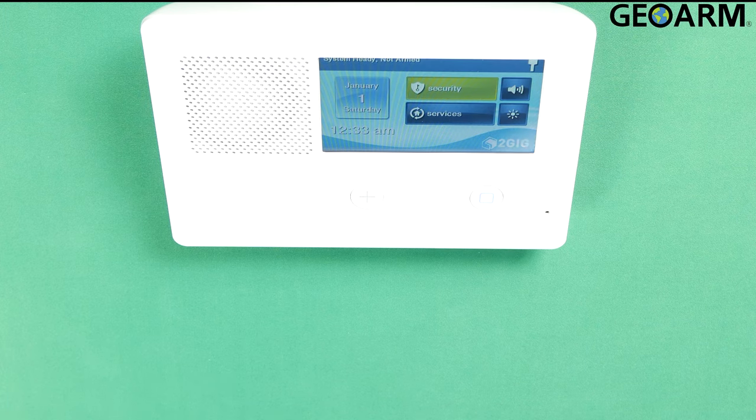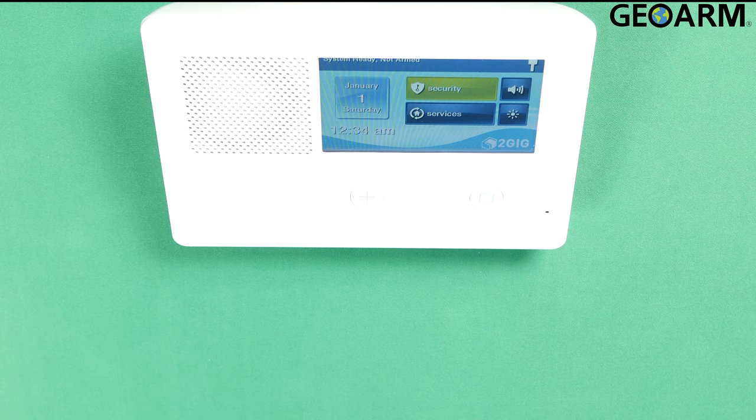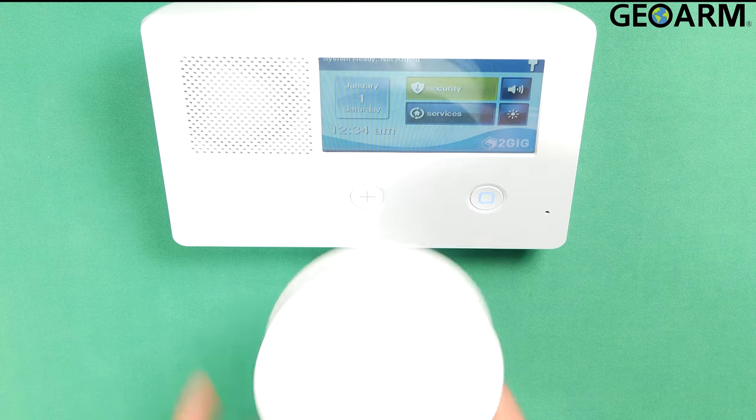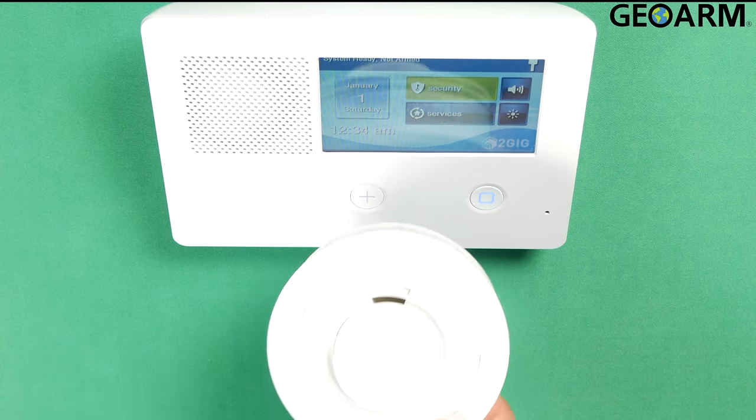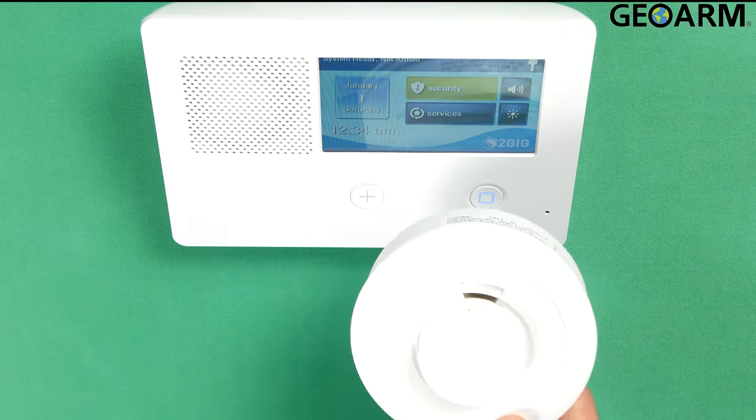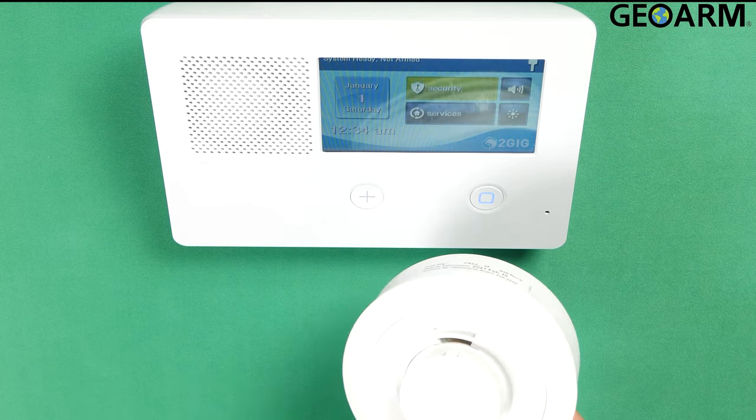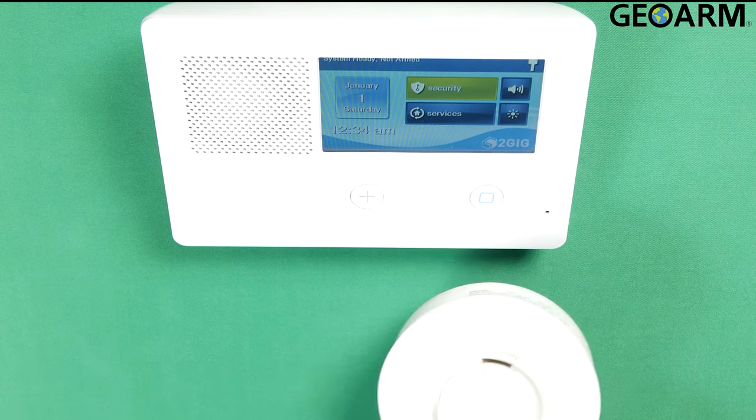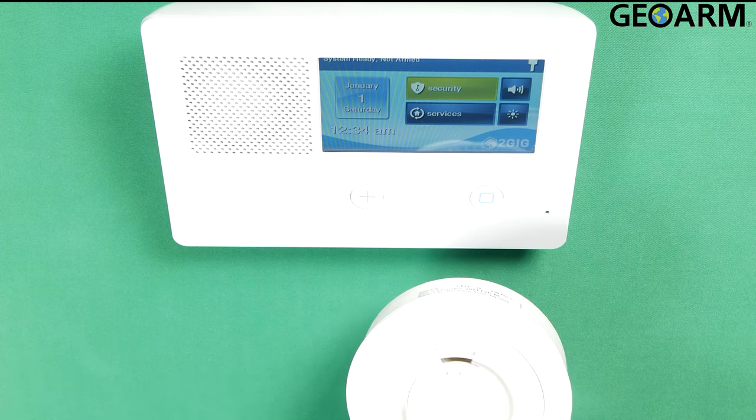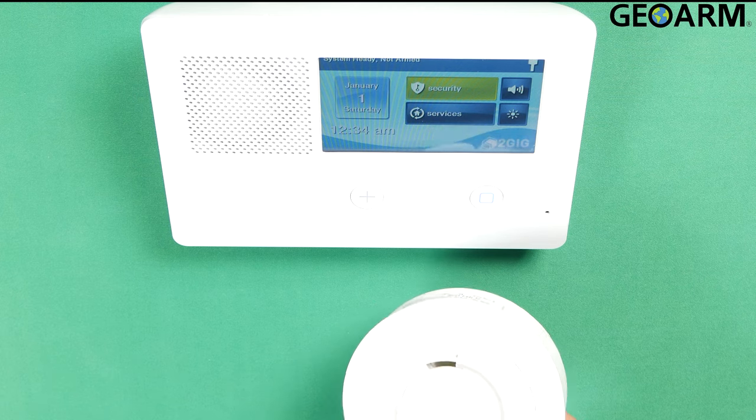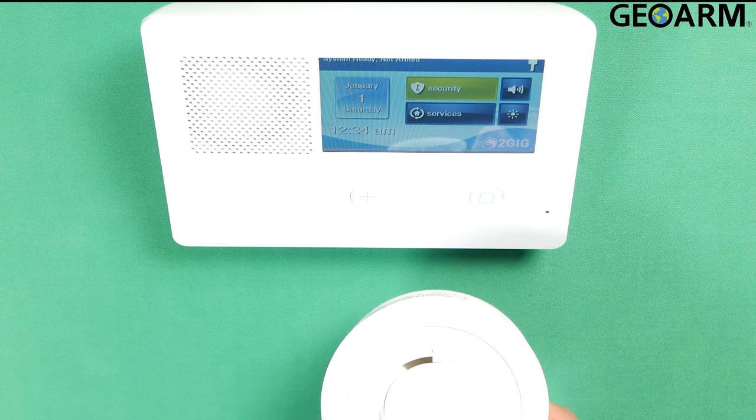Hey everyone, Drew with GeoArm and I am back to talk to you about the 2GIG GC2e and its programming of the SMKT8E-345. This is the encrypted US version smoke detector. I know this does also enroll as a heat and a freeze detection device. I will be showing you how to do that in separate videos. This is a video strictly for programming it as a smoke detector.